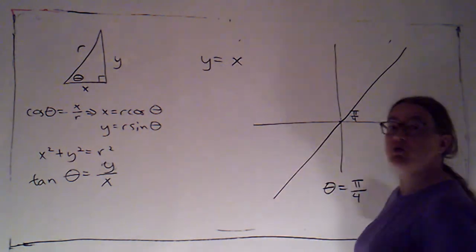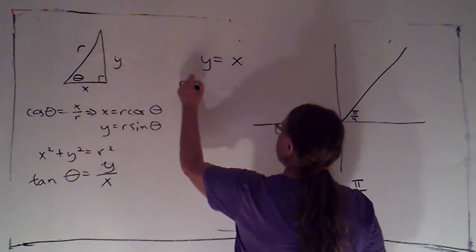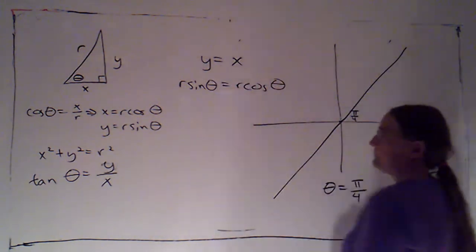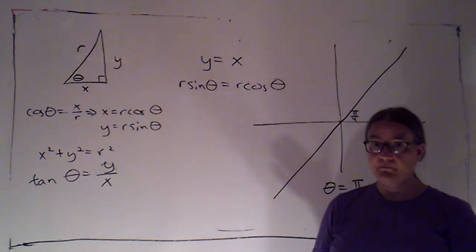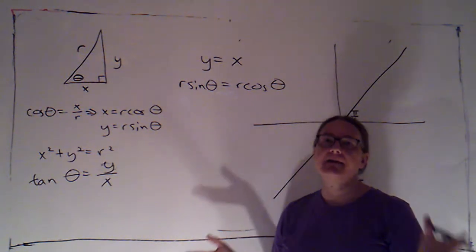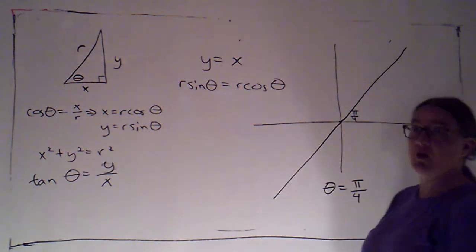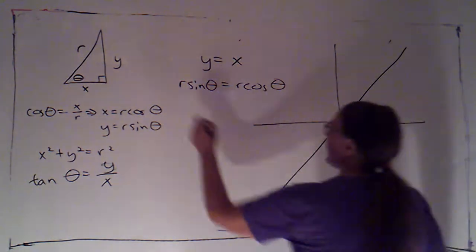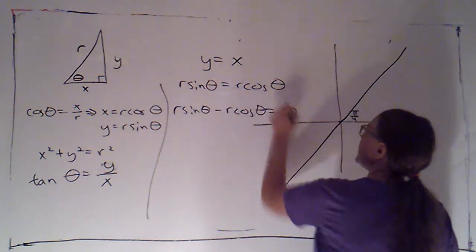So if I want to switch things to polar, I can say, well, y I know is r sine theta. That equals x, which is r cosine theta. Very tempting to just divide out the r. Not legal. We can't divide by variable quantities unless we know that they're not zero. And I don't know that r is not zero. So just like when I'm solving equations, if I can't divide things to make them go away, I'm going to move everything over to one side instead.